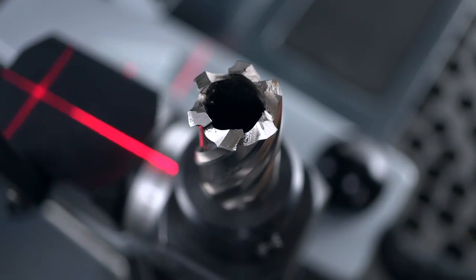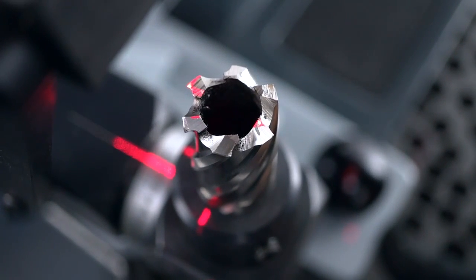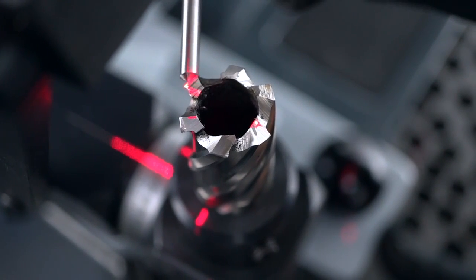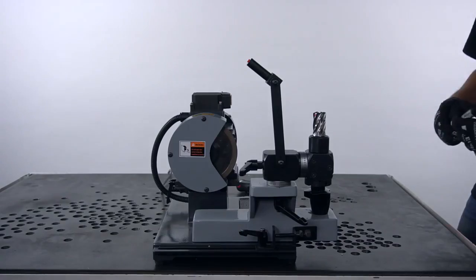We're going to start with resharpening the V-shaped teeth at first. So position the cutter so that the laser touches the outer cutting edge of the V-shaped tooth. Now you can tighten the cutter in place with an Allen key.